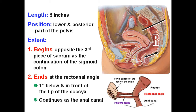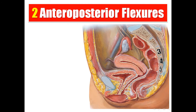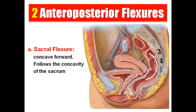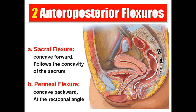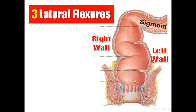The rectum continues as the anal canal. The recto-anal angle is formed by the tone of the puborectalis, part of the levator ani. Regarding the anteroposterior flexures: the sacral flexure is concave anteriorly and follows the concavity of the sacrum. The perineal flexure is concave backward and is present at the recto-anal angle.